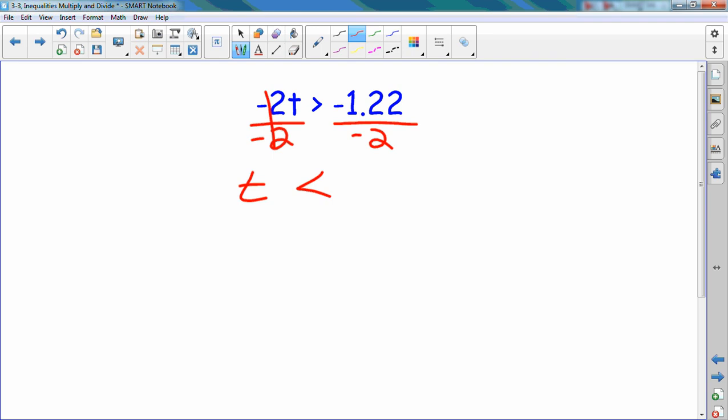I have negative 1.22 divided by negative 2. Negative divided by negative always gives me what? Positive. And does anybody know what 1.22 divided by 2 is? It's 0.61.